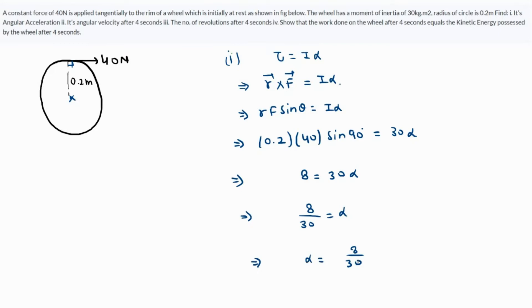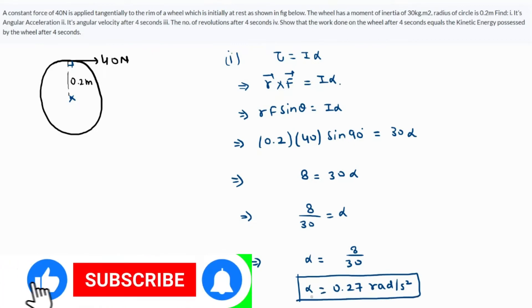The value of 8 over 30 comes out as 0.27 radian per second squared. This is the required value of alpha.